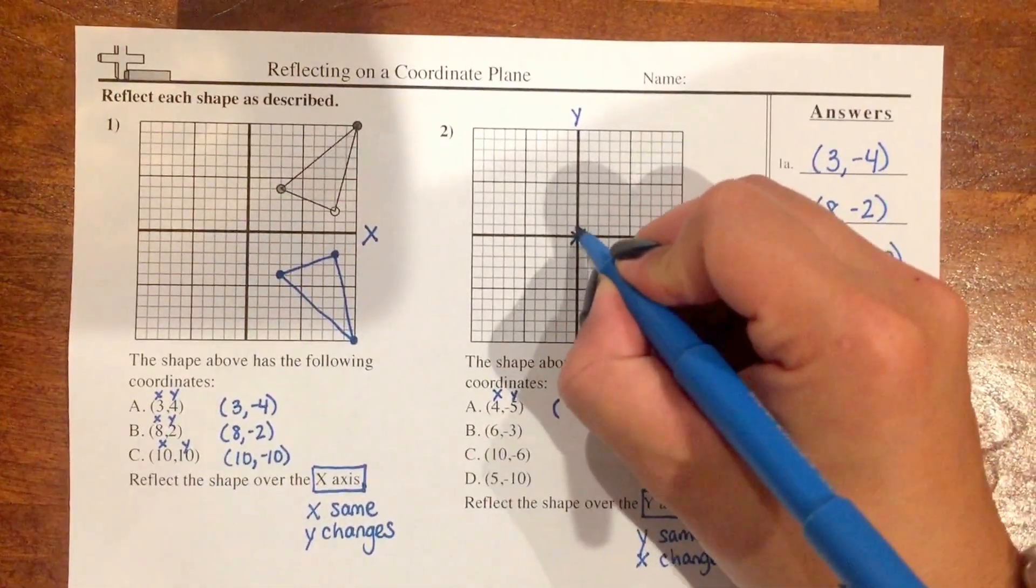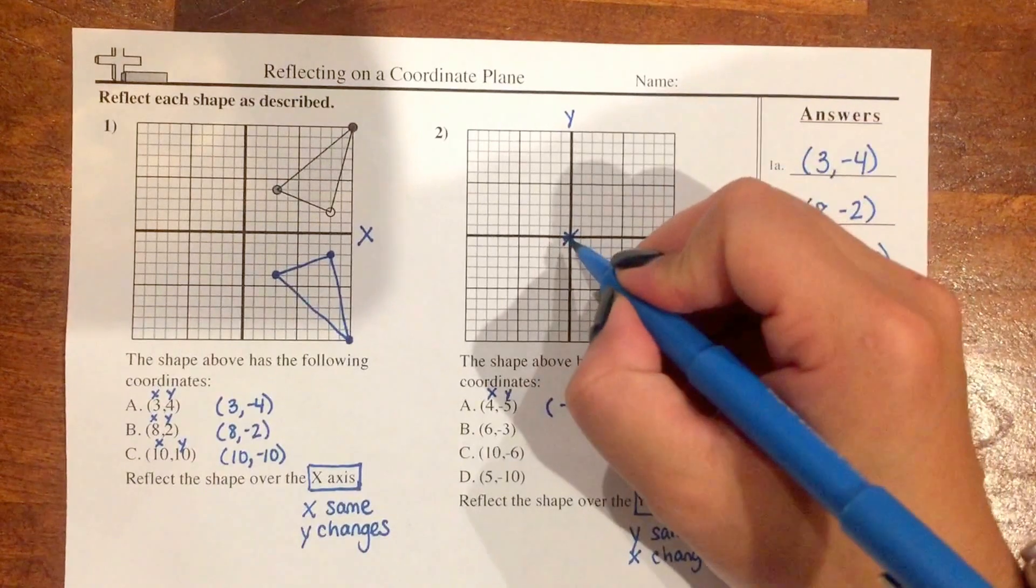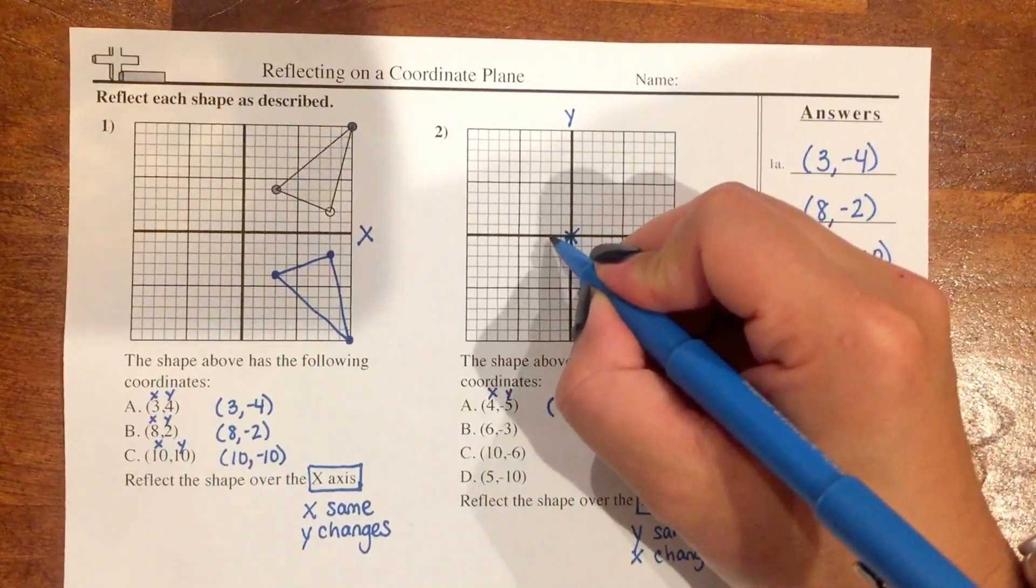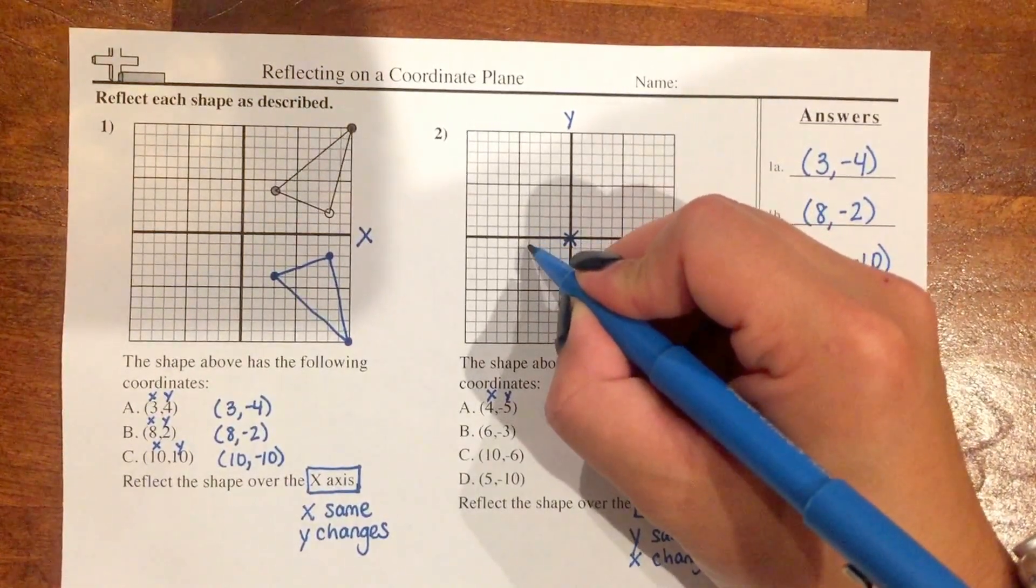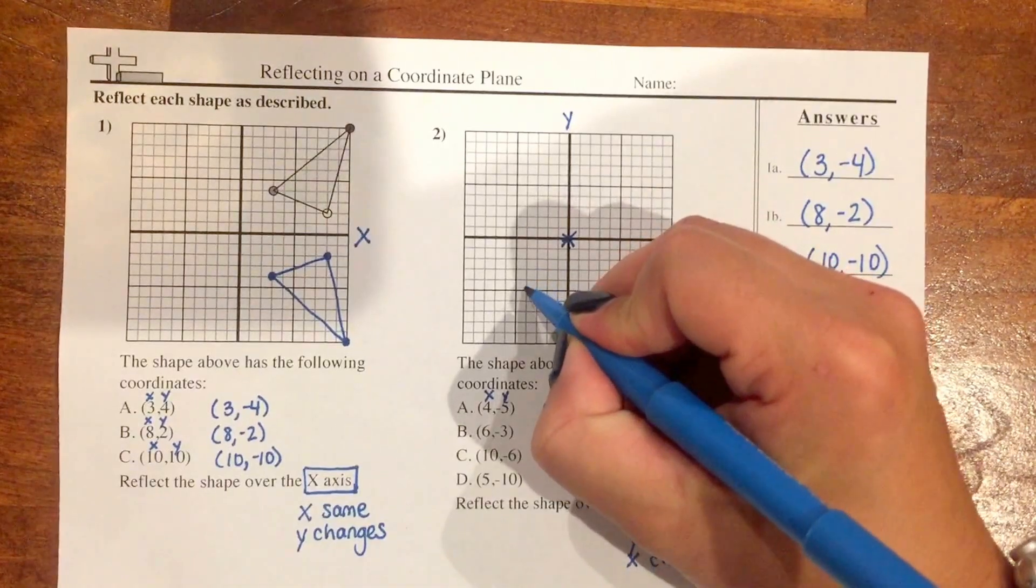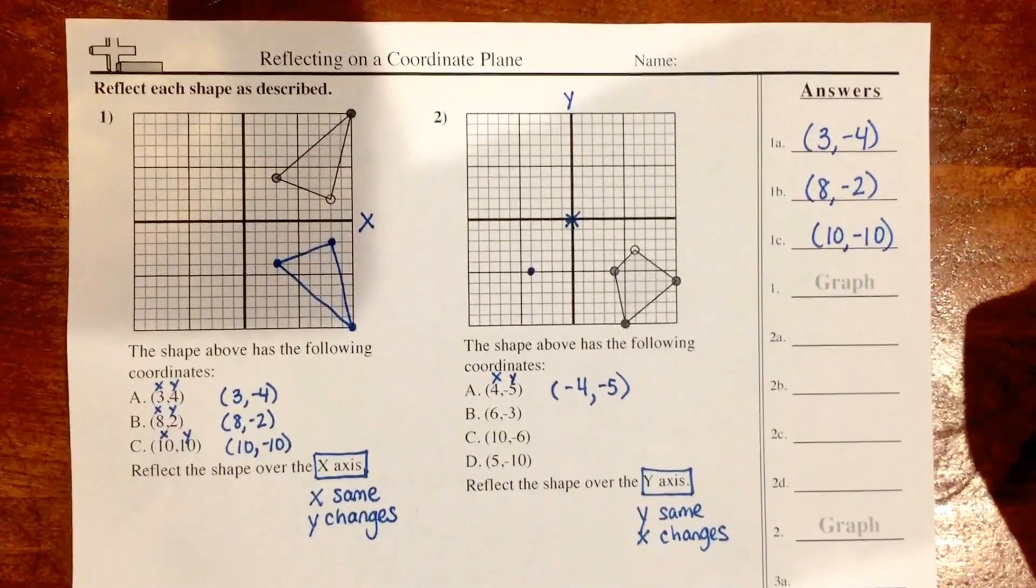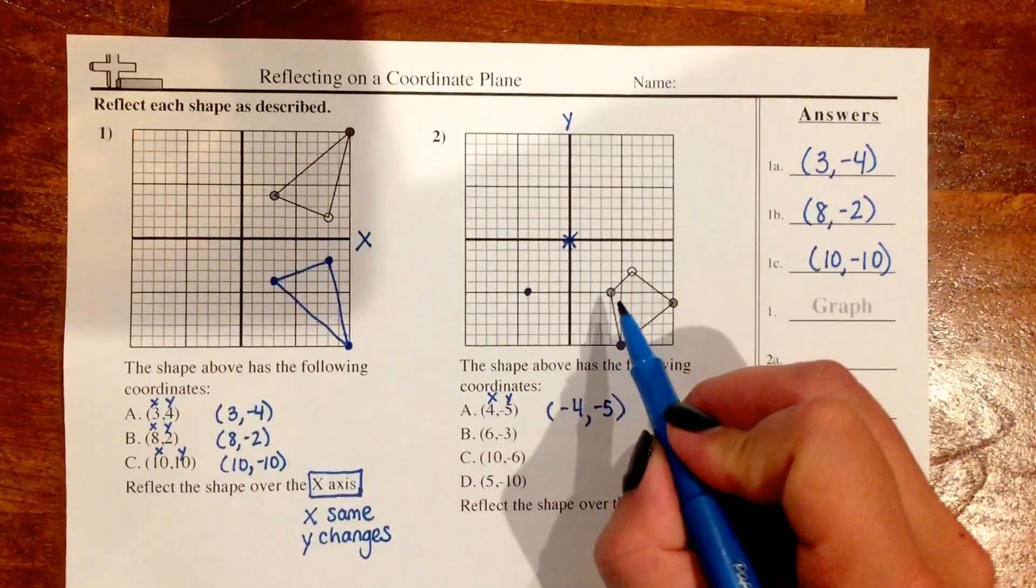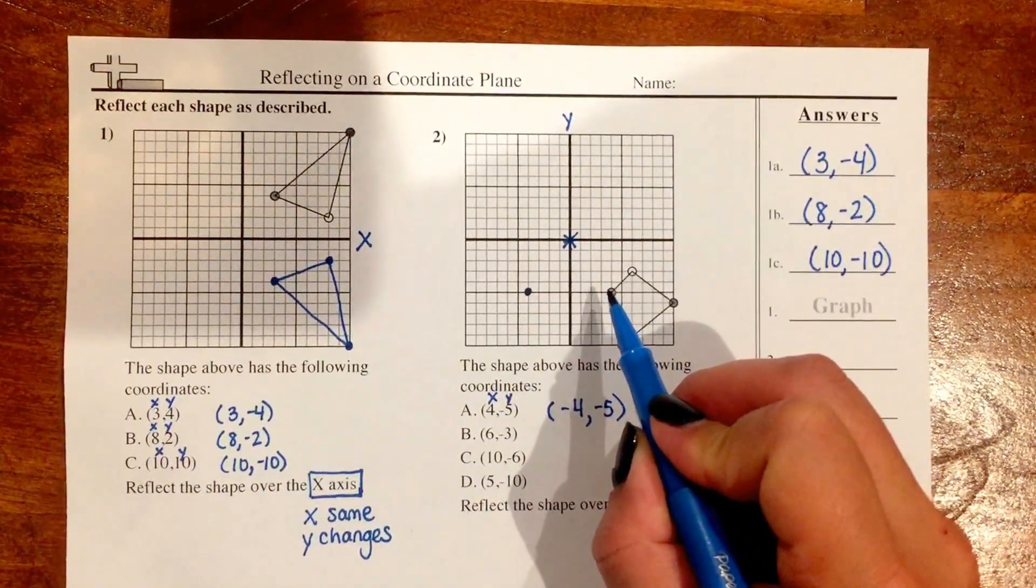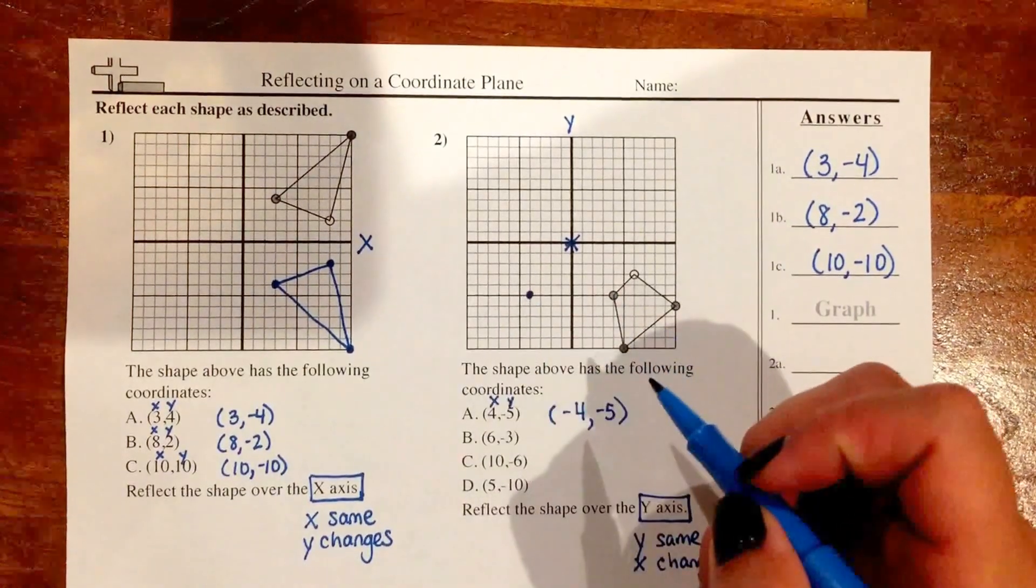So I'm going to go ahead and graph that. Start at my origin, go to the left 1, 2, 3, 4 and down 1, 2, 3, 4, 5. As you can see in number two, you can already tell that my first point has hopped over my y-axis.